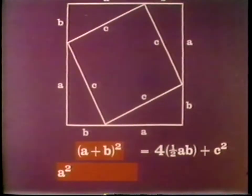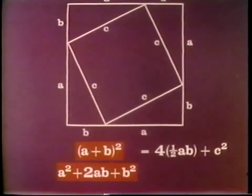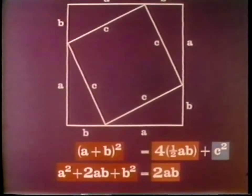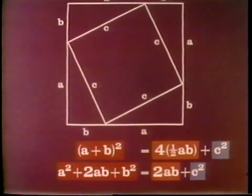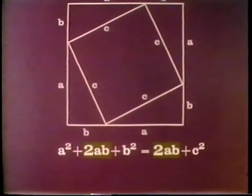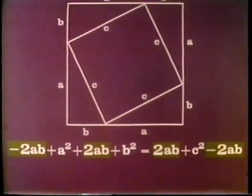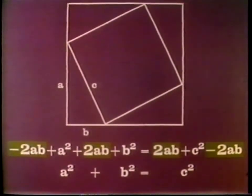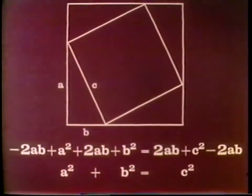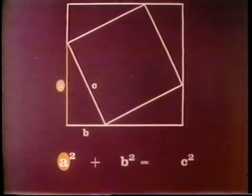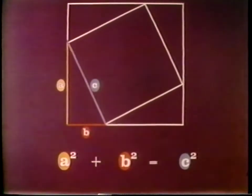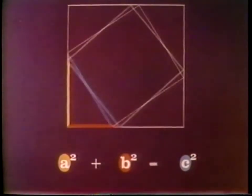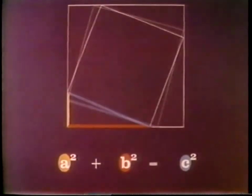We simplify the equation using the rules of algebra, and we have A squared plus B squared equals C squared. This proves the theorem to be true. Notice that the proof holds true for any right triangle, regardless of the length of A, B, and C.